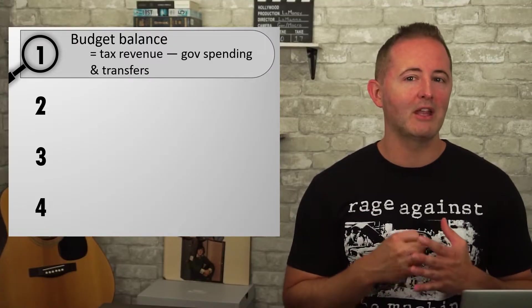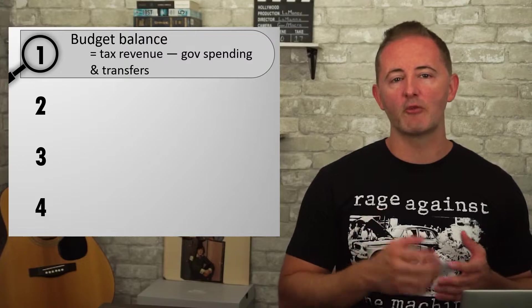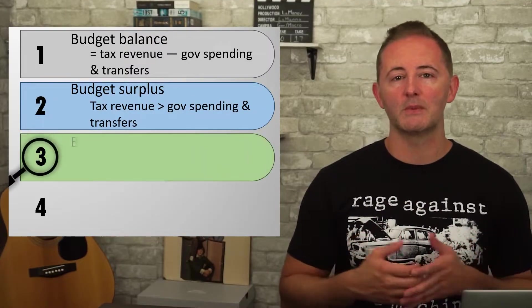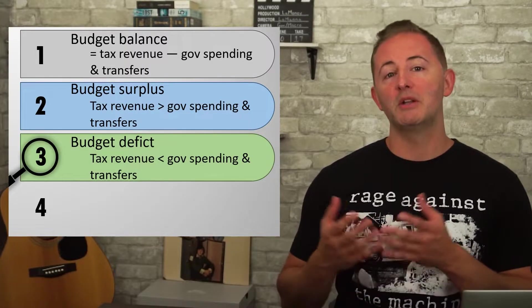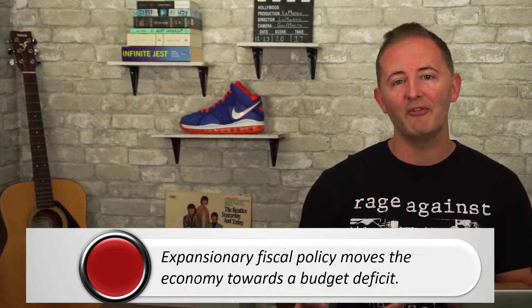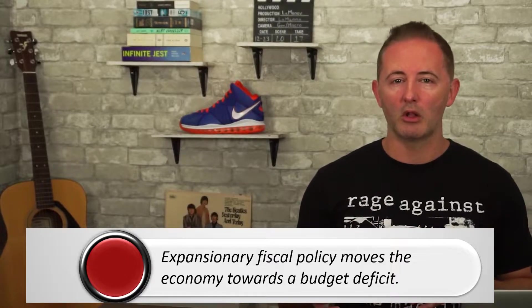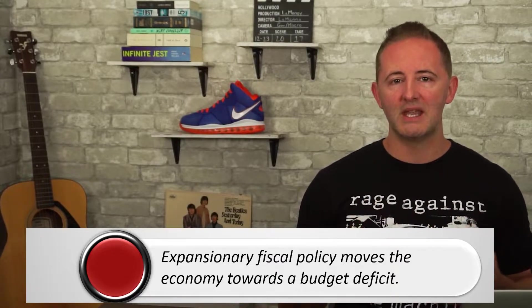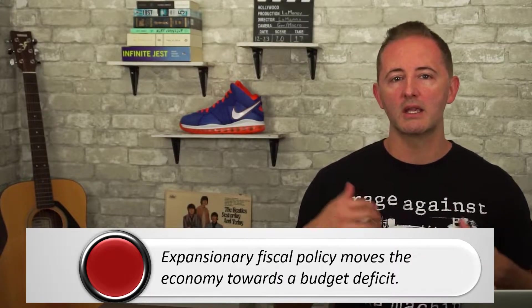Now we're turning to another long-run consequence of fiscal policy: government deficits and the national debt. The budget balance is the difference between tax revenue and government spending and transfers. When tax revenue exceeds government spending, the federal government has a budget surplus; when tax revenue is less, the government has a budget deficit. Expansionary fiscal policy moves the economy towards a budget deficit — since it involves lower taxes and increased spending, it moves the budget balance towards a deficit. This is a cost or trade-off of running expansionary fiscal policy.